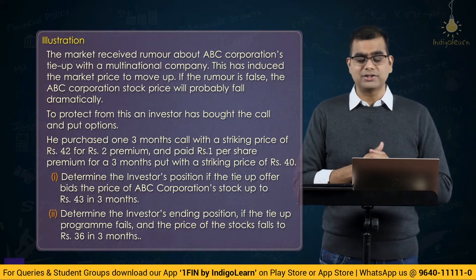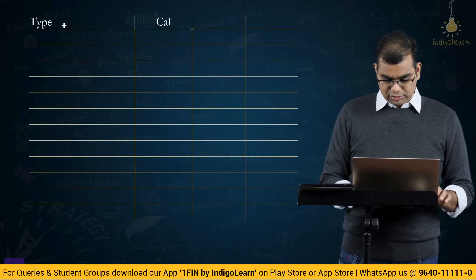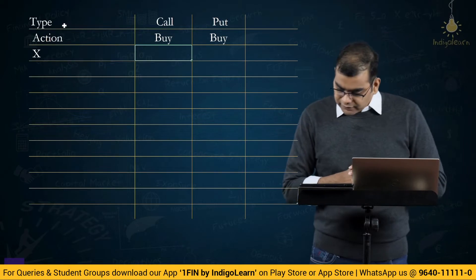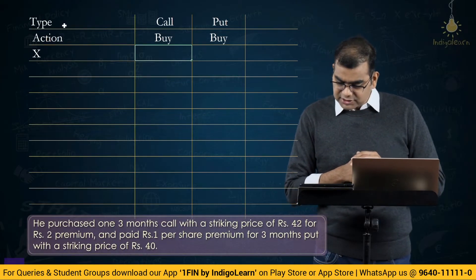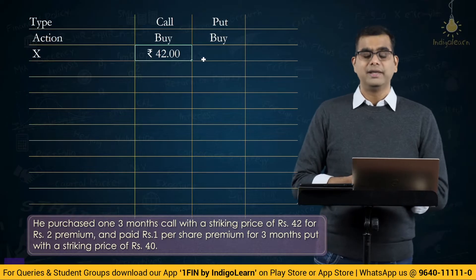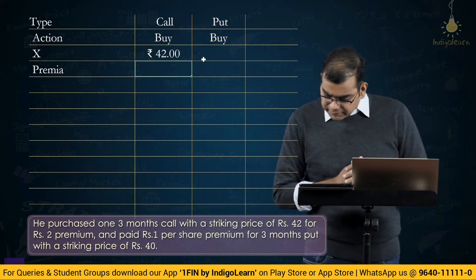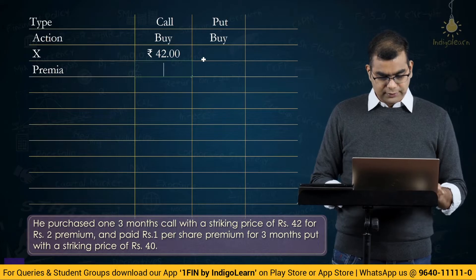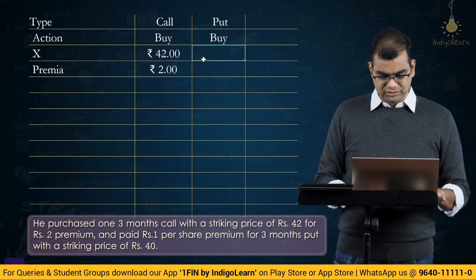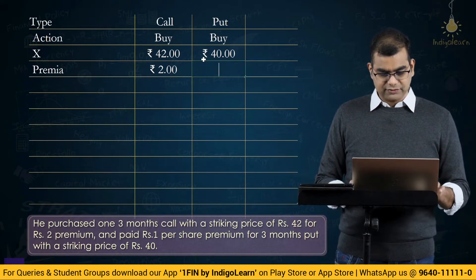The current spot price is not available. Both call and put actions are buy. The call option has a strike price of ₹42 with a premium of ₹2. The put option has a strike price of ₹40 with a premium of ₹1.